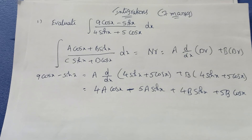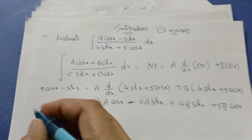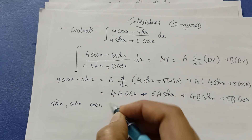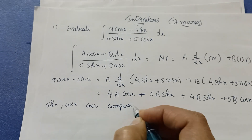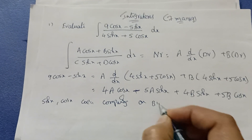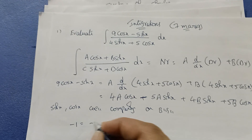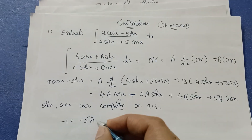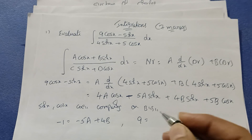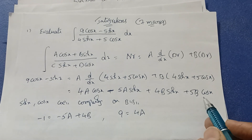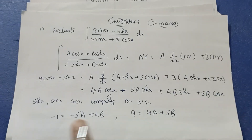Now compare the sinx and cosx coefficients on both sides. For sinx terms on the left side: coefficient is minus 1, equals minus 5a plus 4b on the right. For cosx terms: coefficient is 9 on the left, equals 4a plus 5b on the right.